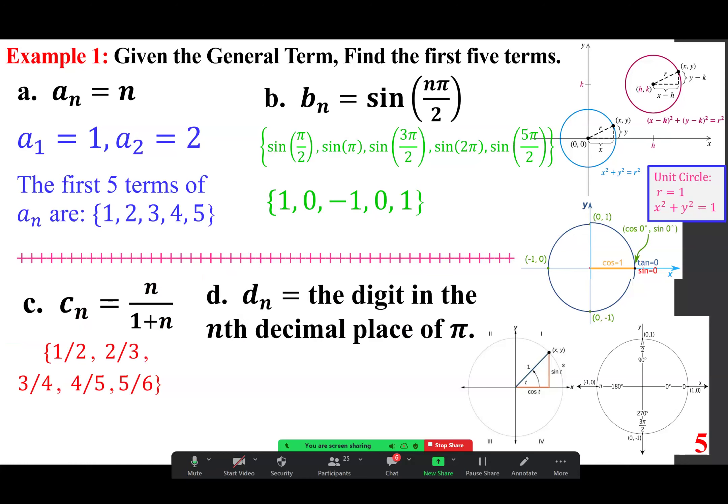Finally, on this page, d sub n represents the digit in the nth decimal place of pi. Pi is approximated by 3.14, but it's not equal to that. Pi is 3.14159, and it continues indefinitely. So the nth decimal, the first decimal is 1. The second decimal is 4. The third one is 1. The fourth one is 5. The fifth one is 9. And that's all we want, the first five terms. And that's all we need to do.